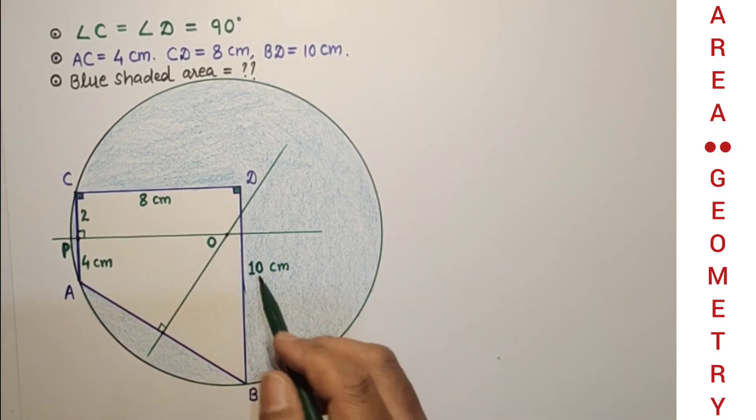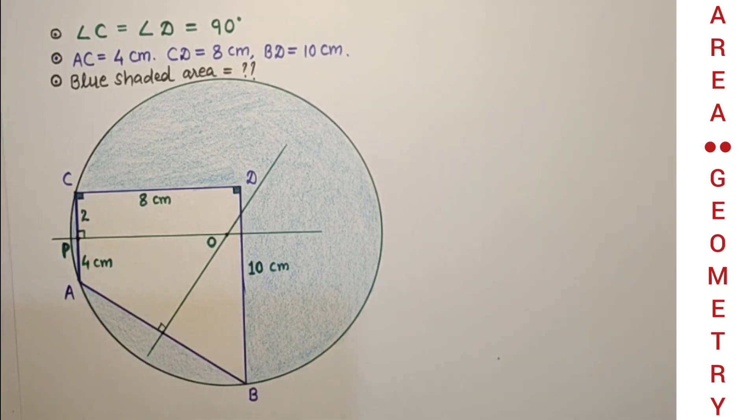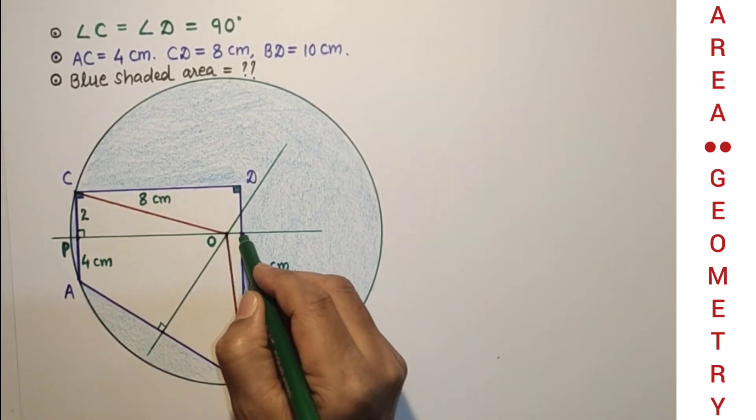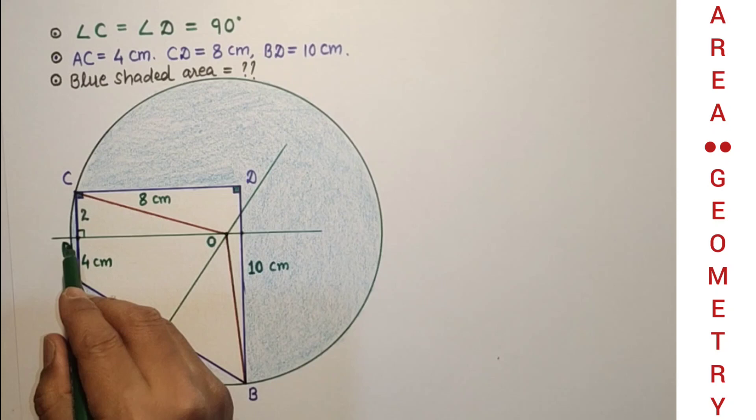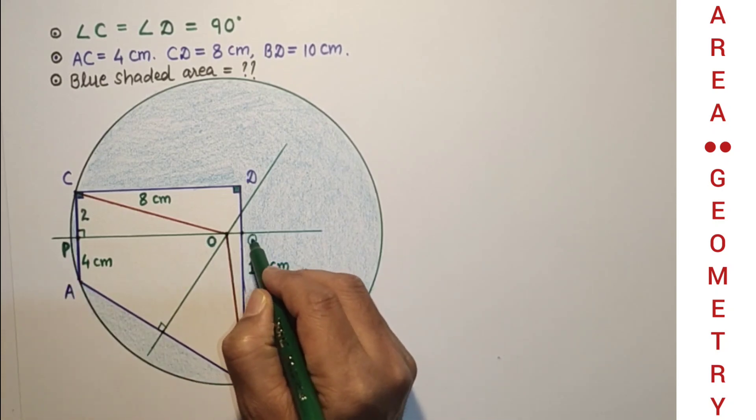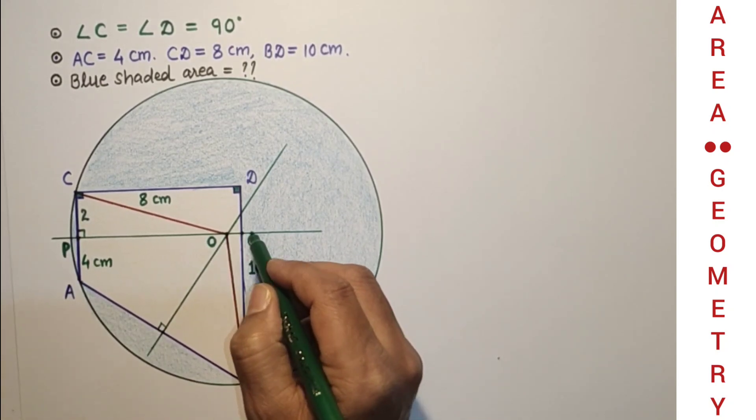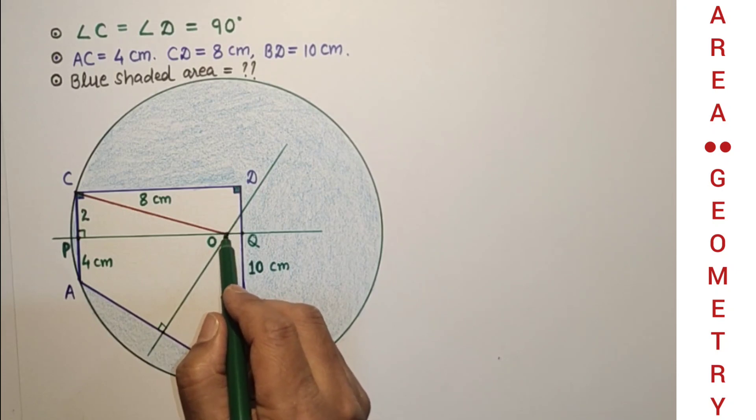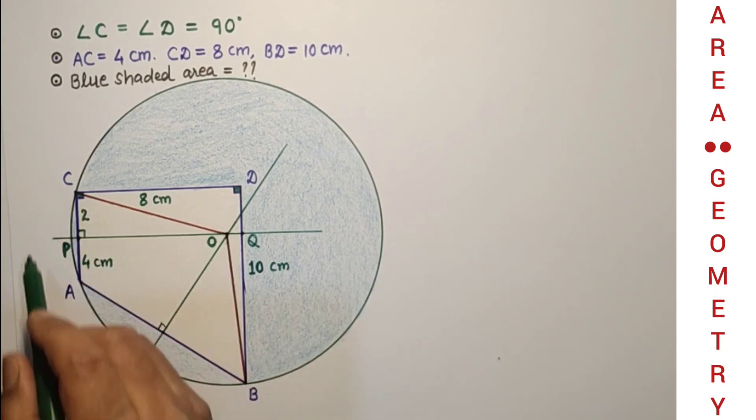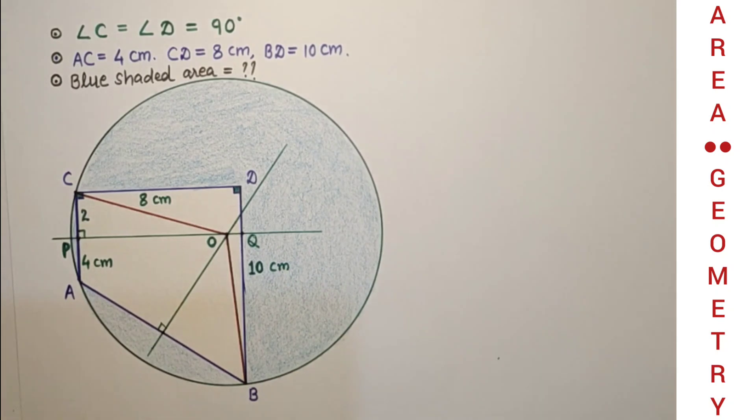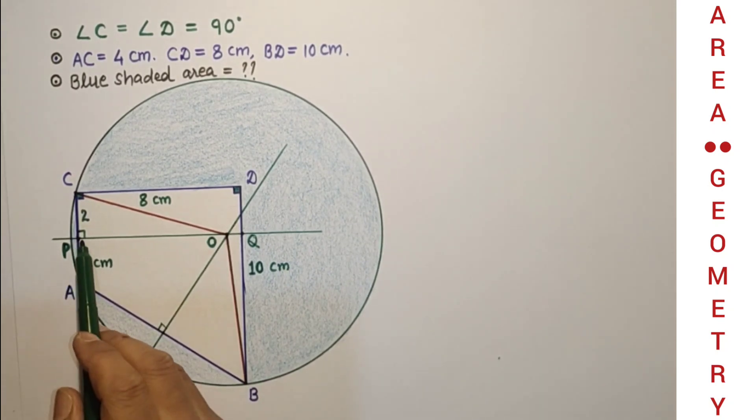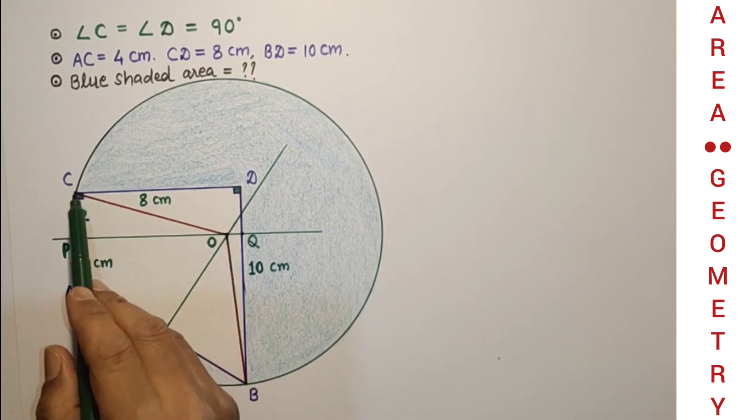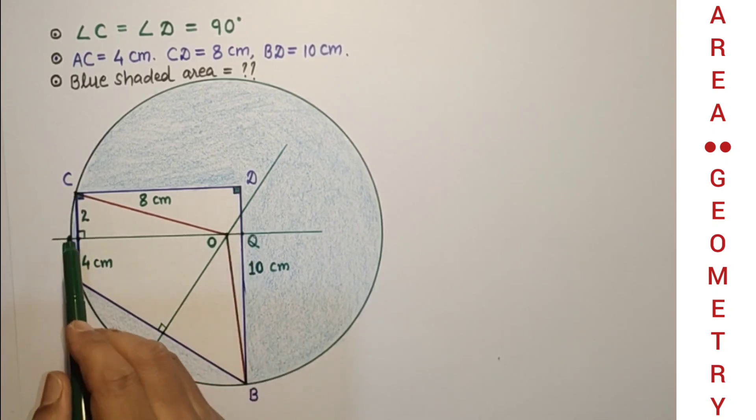And this is O. Join OB and OC. Let this point be P and this is Q. So there are two right angle triangles: we have triangle OPC and triangle OQB. This angle is right angle perpendicular bisector, this is 90, this is 90, this is a rectangle, this is 2.